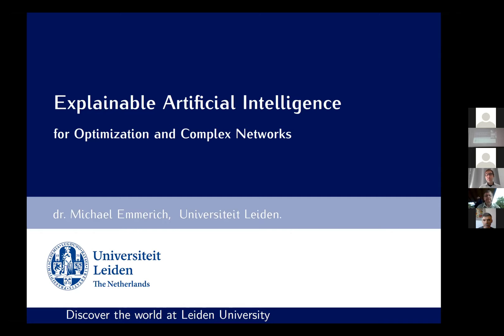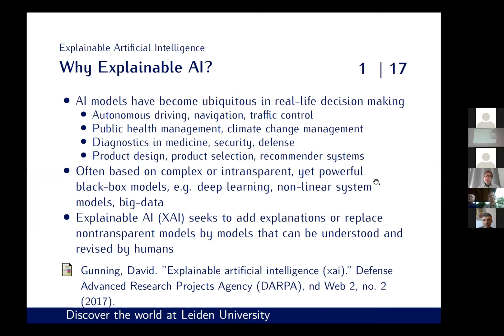Making AI more human-centered and easy to understand is called explainable artificial intelligence. It is mainly used for predictions and classification tools based on deep learning, but I would like to give a perspective on how we can use this also in other AI tools, like in the analysis of complex systems and in decision making based on optimization.